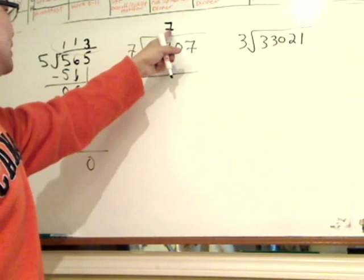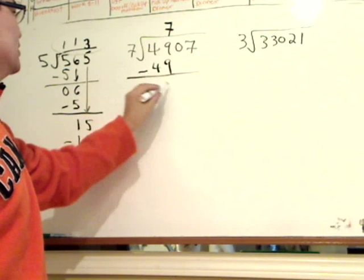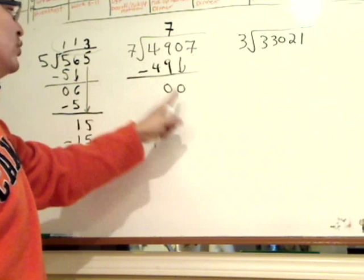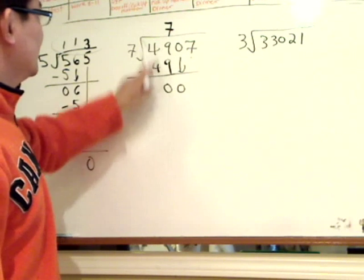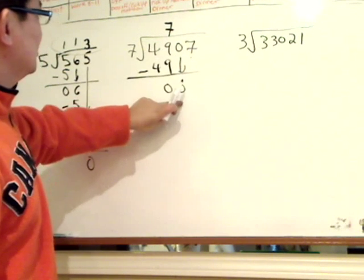So 7 times 7 is 49. Subtract, the difference is 0. Bring down the 0. 7 cannot go into 0. Now this is a trick here because we brought down the 0, the place of the 10, the placeholder, and you can't even divide that.